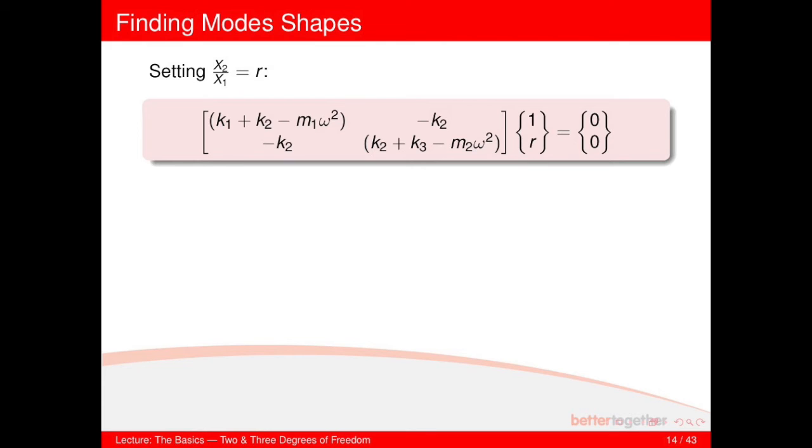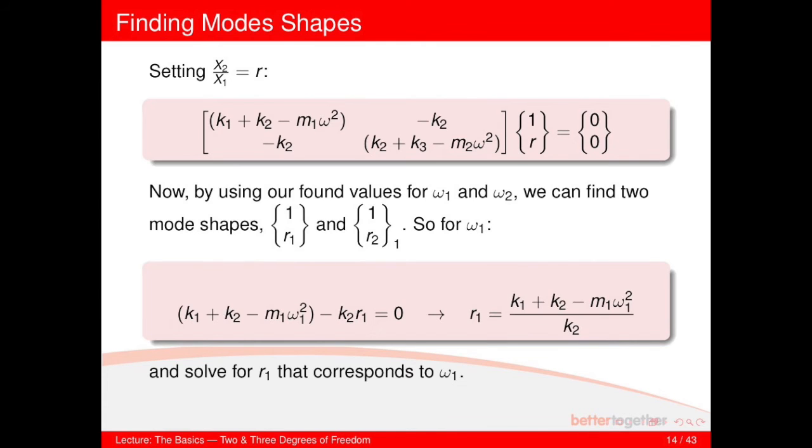Here I've not done that, I've just kept it in terms of variables. So by using our found values for omega 1 and omega 2, we can insert them into this equation and solve for R, and we find two mode shapes, 1 and R1, and 1 and R2.